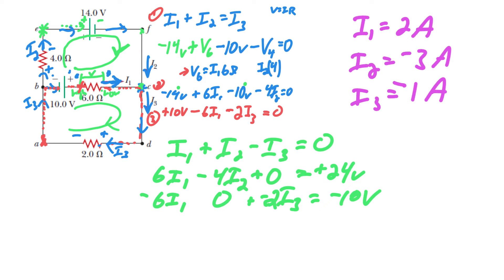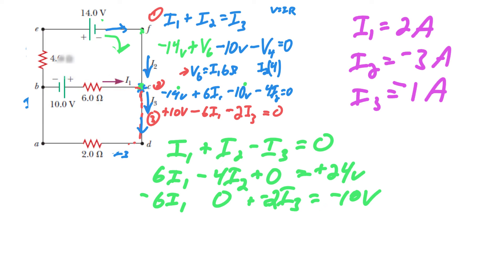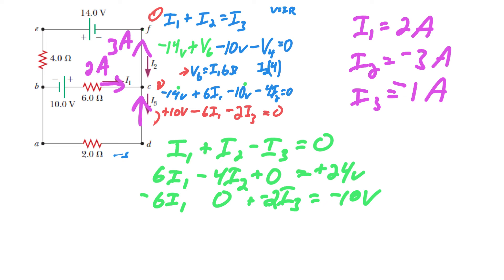The negatives mean that when we drew our initial currents, we just had them in the wrong direction. Our I1 was good — it's 2 amps in the direction we drew. Our I2 is actually going in the other direction, which is 3 amps. And I3 is actually going upward instead of downward, at 1 amp. As a check: 2 amps going right plus 1 amp going up equals 3 amps — that's consistent, so we're probably on the right track.